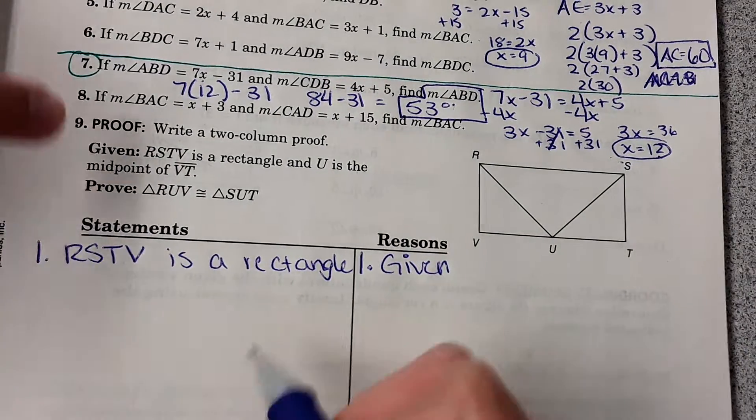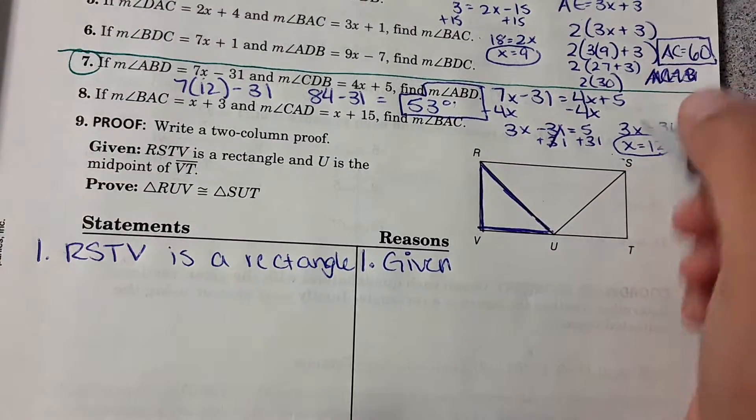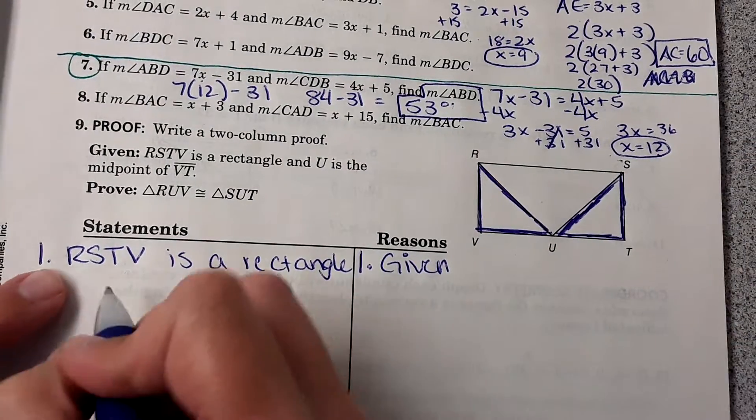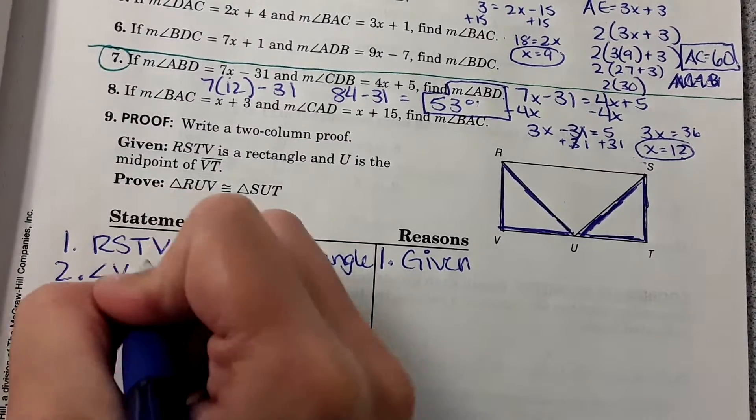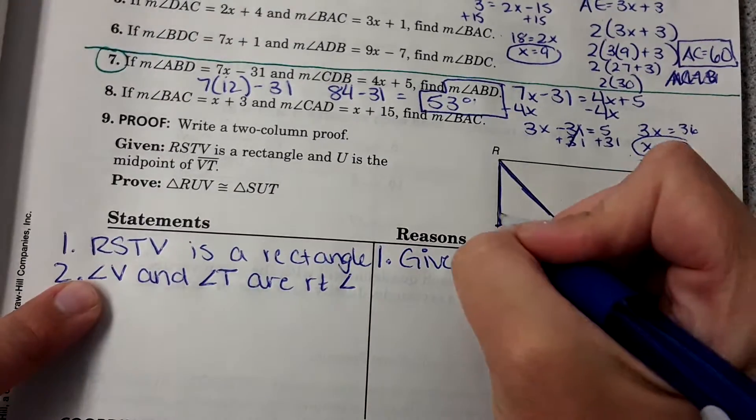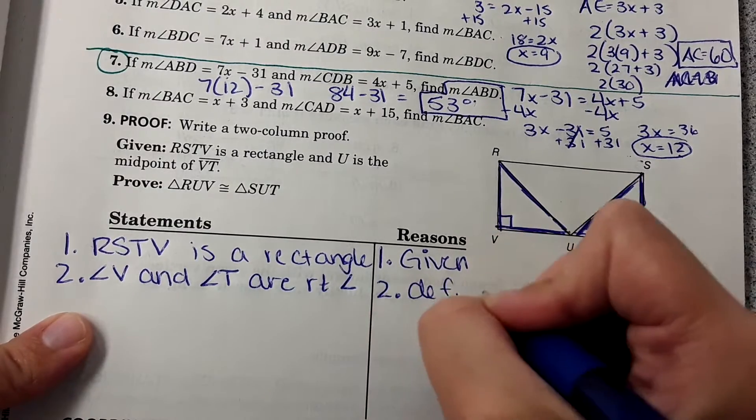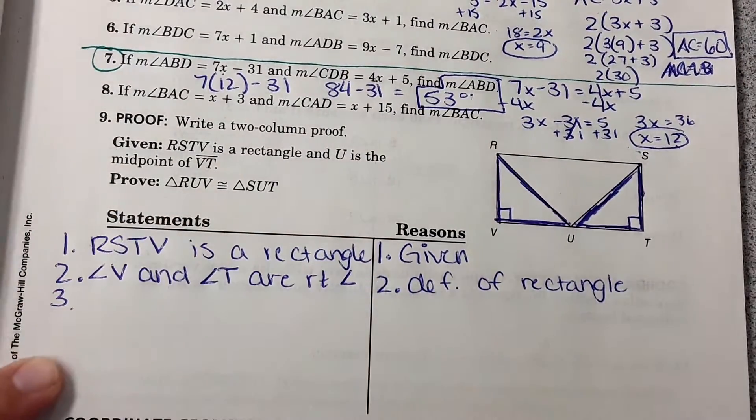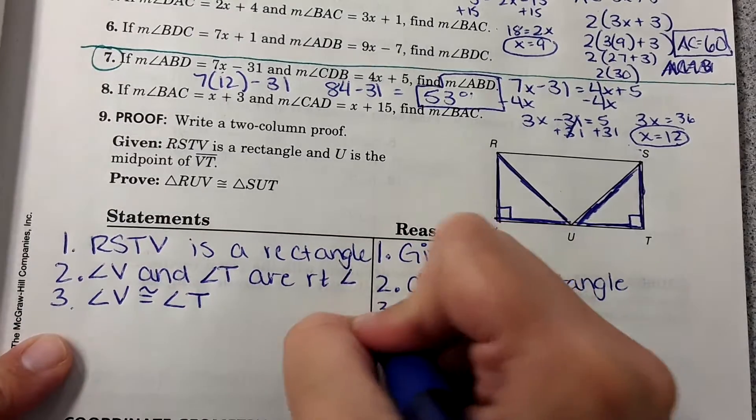The first part of the given is that rectangle RSTV is a rectangle. And then the second given, I'm going to wait to put that here in a second. It says to prove that RUV, so this triangle here, is congruent to SUT. Okay, so starting with the given RSTV is a rectangle. Then since it's a rectangle, then angle V and angle T must be right angles. So angle V and angle T are right angles. That is because of definition of rectangle. Then third step, well, if they're both right angles, then angle V must be congruent to angle T. And that's because all right angles are congruent.